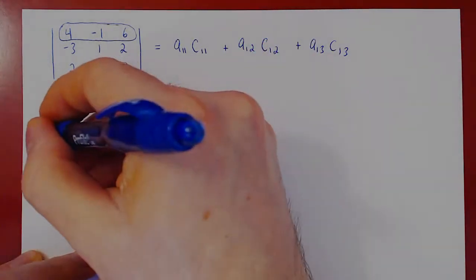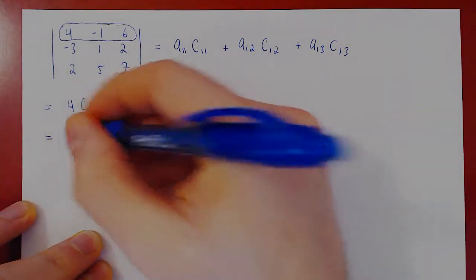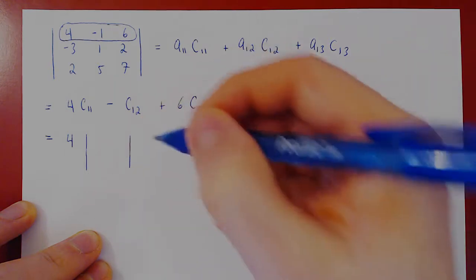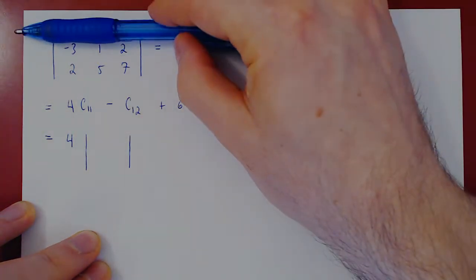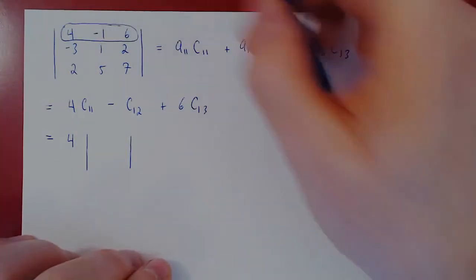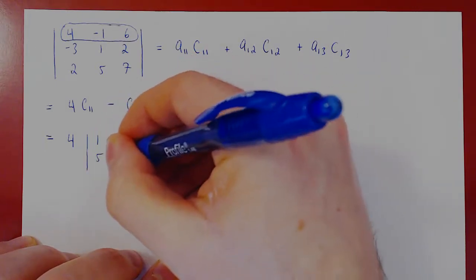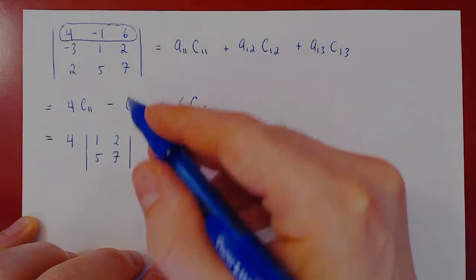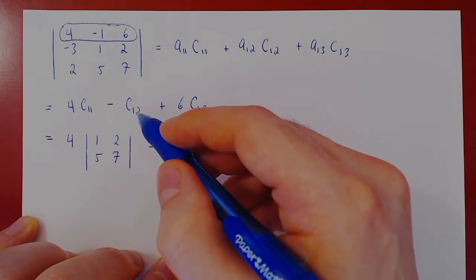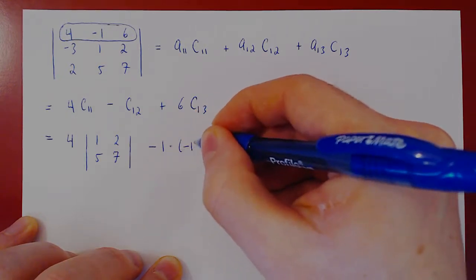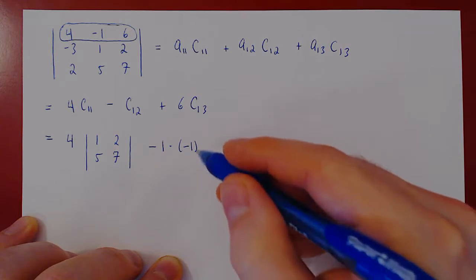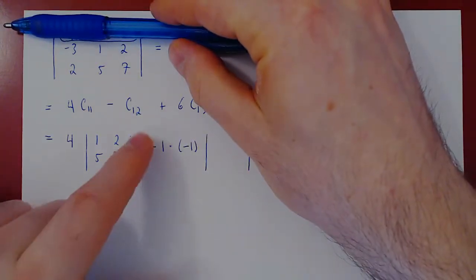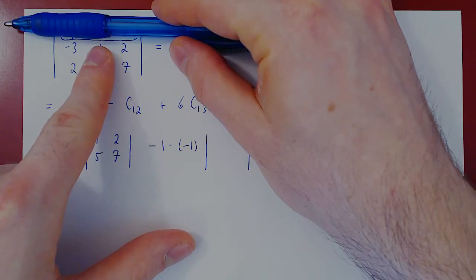Finding the cofactors: C11 has sign negative 1 to the power 1+1, which is positive, times the determinant of the submatrix after deleting row 1 and column 1, giving us the matrix 1, 2, 5, 7. For C12, 1 plus 2 is 3, which is odd, so there is an additional negative sign. We get negative 1 times the determinant of the matrix after deleting row 1 and column 2, which gives us the matrix negative 3, 2, 2, 7.